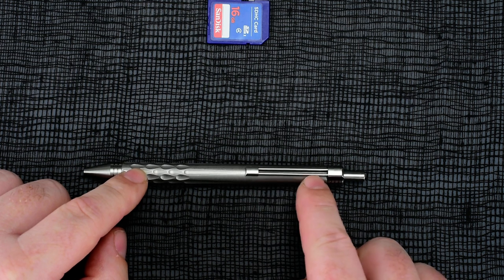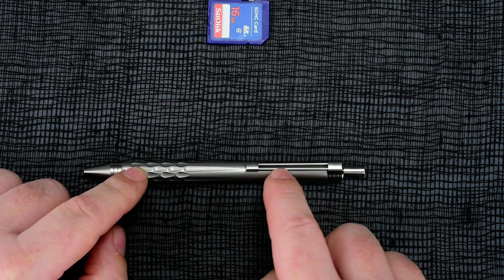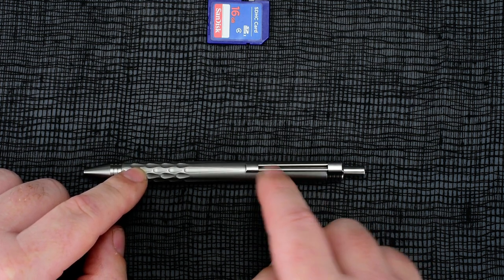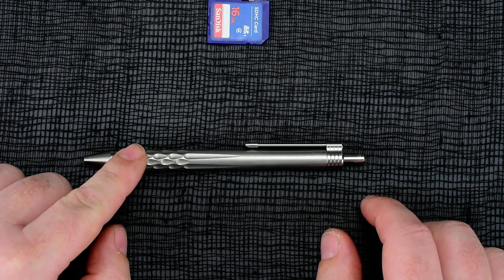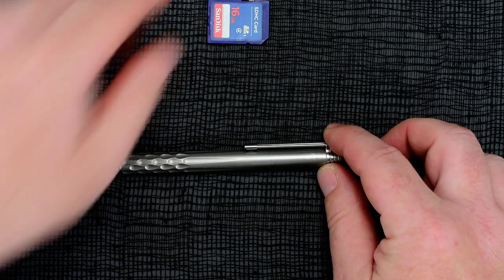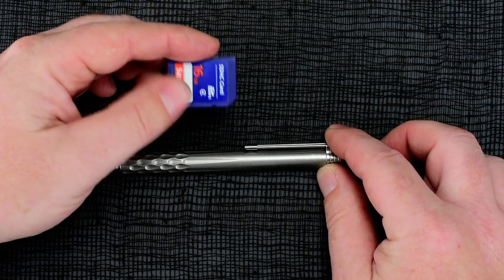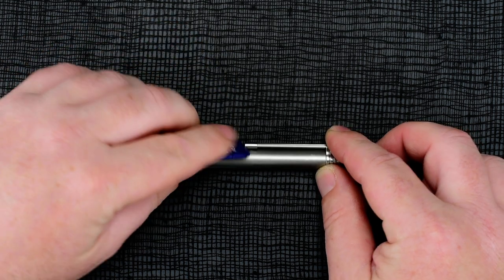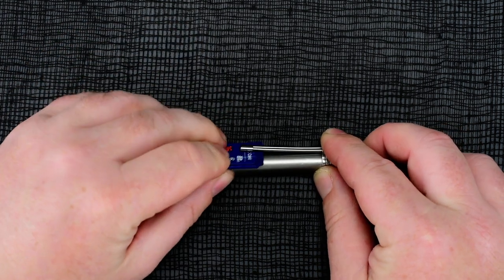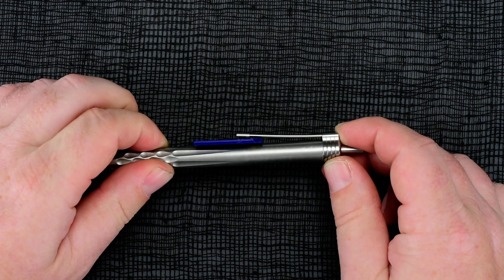These are stainless steel dowel pins that we use. These are bought, not something we make. They're just regular stainless steel dowel pins. But here's what I want you to see. This is a regular SD card and we can put that SD card under this clip.